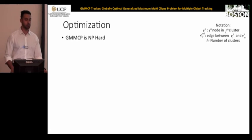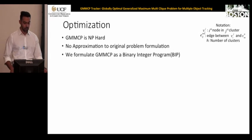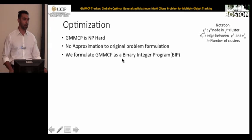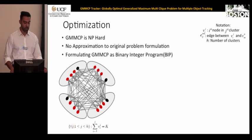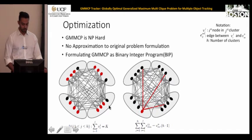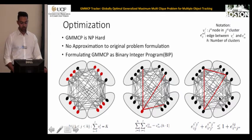GMMCP is an NP-hard problem. We formulate it directly using binary integer programming without relaxation. To ensure the solution is valid, three constraints must be satisfied: the first ensures exactly k nodes from every cluster are selected; the second ensures that if one node is selected, h minus one edges connected to it are also selected, where h is the number of clusters; the third ensures the solution forms a valid clique.